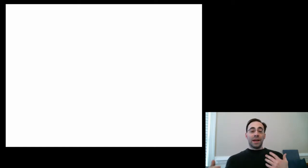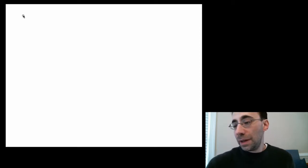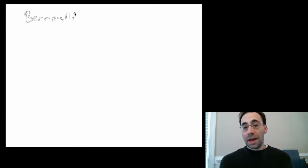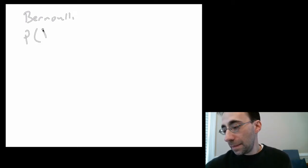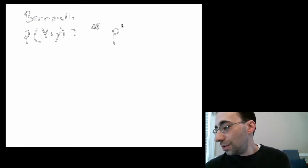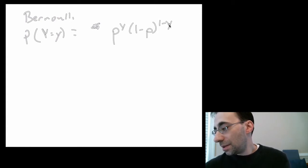So let's begin with the probability distribution associated with a single draw from a trial. This is known as the Bernoulli distribution. And it looks like this: the probability that some random variable y equals lowercase y is equal to p to the y times 1 minus p to the 1 minus y.